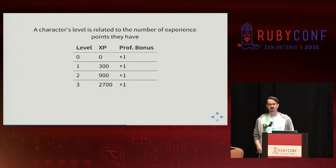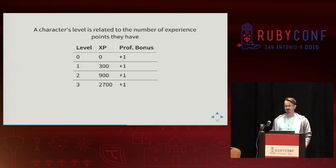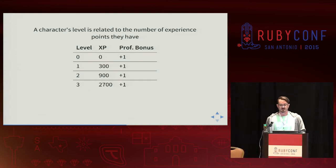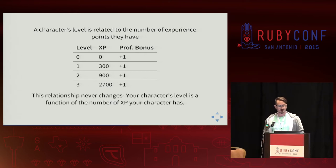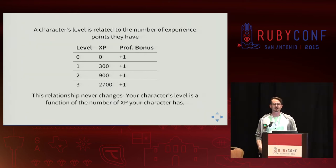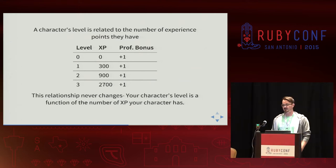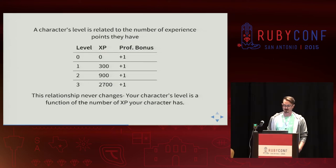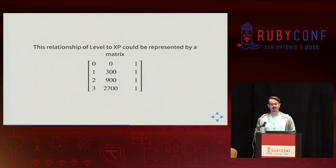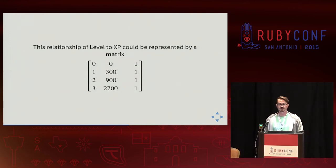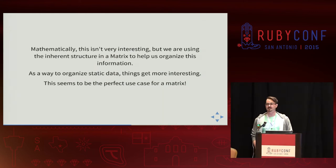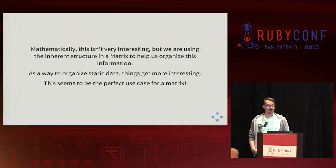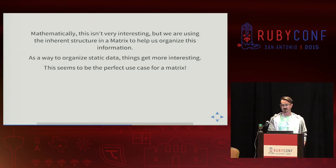In D&D, a character's level is related to the number of experience points they have. We have a table representing level versus experience points versus proficiency bonus — proficiency bonus being a modifier you apply when you roll a die. This relationship really never changes: when you get to 900 experience points you are level two until you get to 2,700. As I looked at that table, I saw it was just a matrix — just a multidimensional array. It's a very pragmatic way to organize that data in a matrix structure.